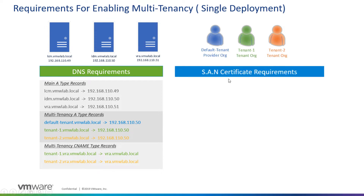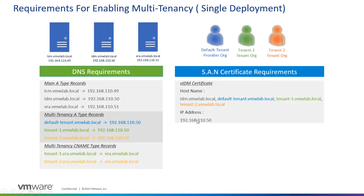For the SAN certificate requirements, we'll create two certificates. The first is the VIDM certificate applied on the IDM appliance. When creating this SAN certificate, make sure the hostname includes the main FQDN of the IDM appliance, the default-tenant hostname for the provider org, and tenant-1 and tenant-2 hostnames. We're also pointing to the physical IP address of the IDM appliance — which is optional, but useful for documentation purposes within the certificate.